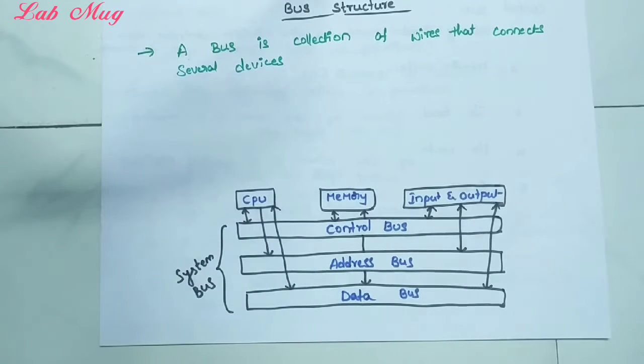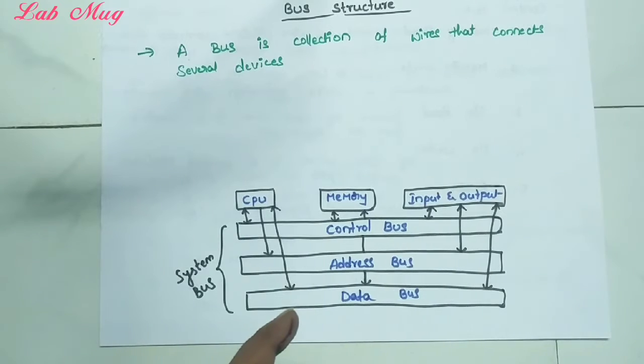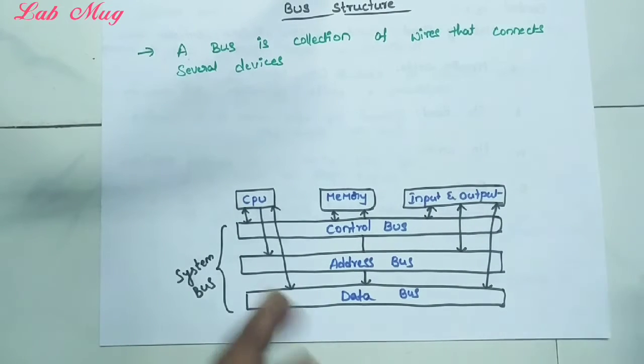Each and every device can use a wire to connect to the central processing unit - that is the CPU. That is why we say that the bus connects different devices.